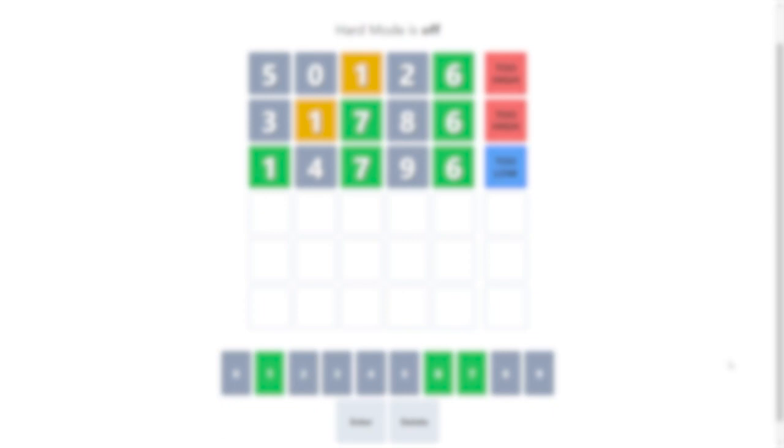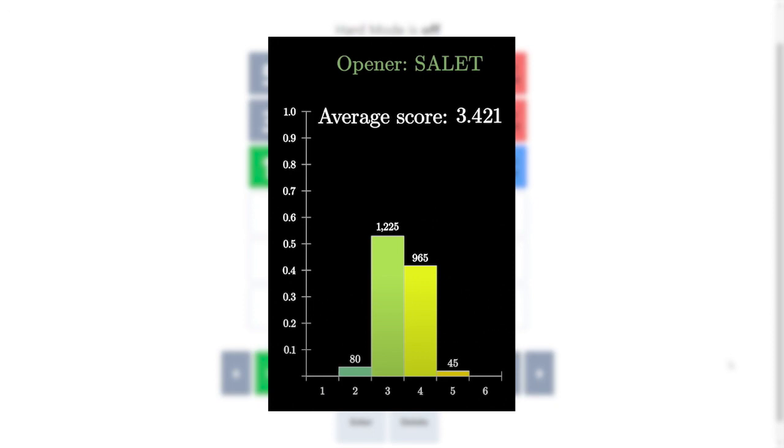In Wordle, your primary objective is to solve the game within 6 tries, and your secondary objective is to minimize the number of guesses needed to get to the solution. When played by a computer, the opening word salad wins 100% of the time and has the lowest possible average score, also called the expected score.